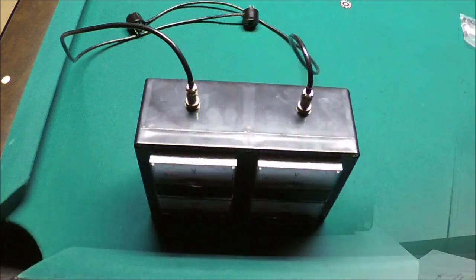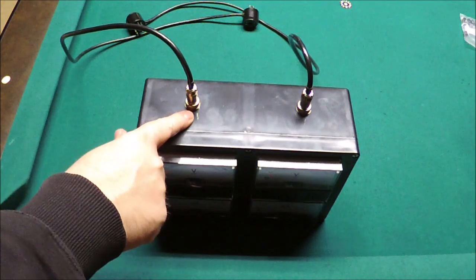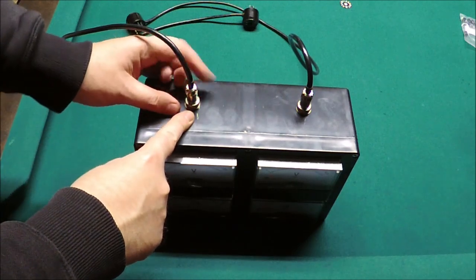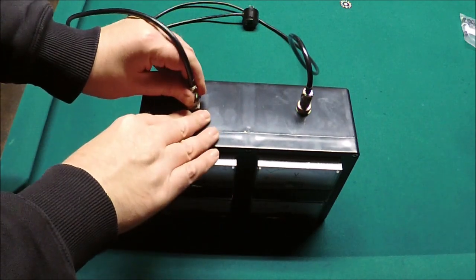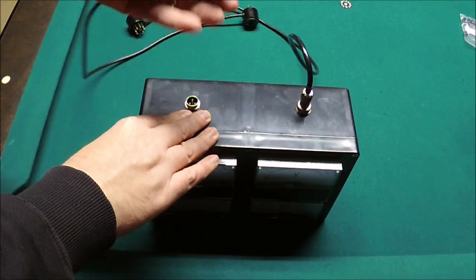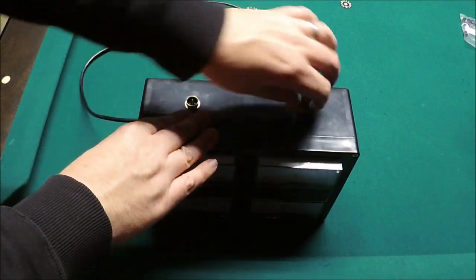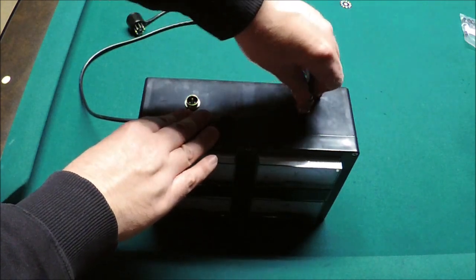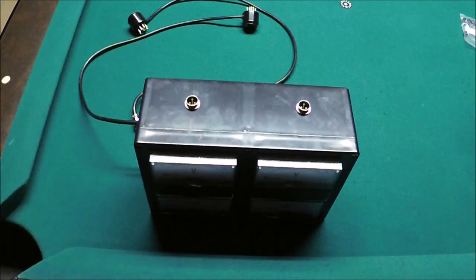The deluxe version of the Bias Boss has easily interchangeable probes. So if you need to do an amp with 6BQ5s, you can simply unscrew and unplug the probes for your octals and attach the probes for your 9-pin.